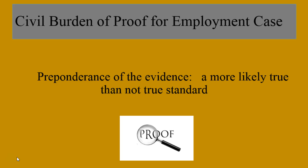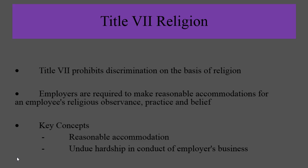Preponderance of the evidence for the plaintiff is a 'more likely true than not true' standard. If you think about a football field and the 50-yard line, once the employee crosses that 50-yard line toward the other side's end zone, they've established a more-likely-true-than-not-true standard required for preponderance of the evidence. Just crossing over into that other side's territory meets the evidentiary standard. It's much different than a standard of proof in a criminal context.